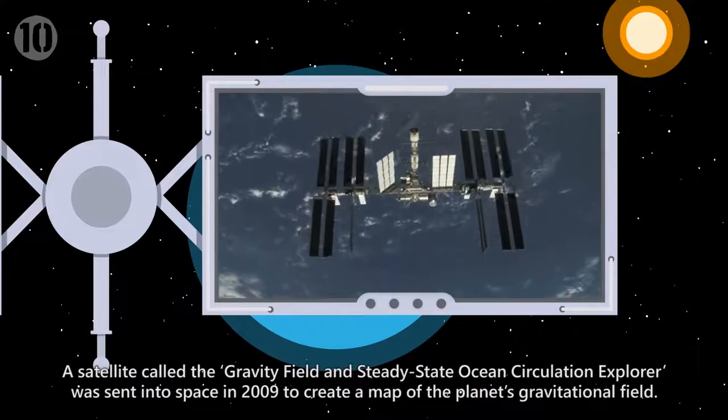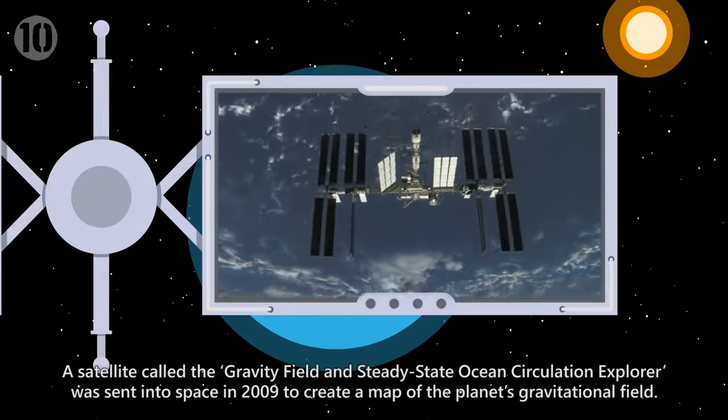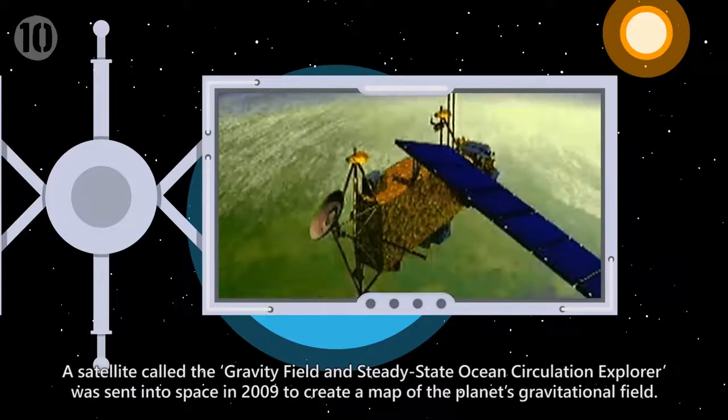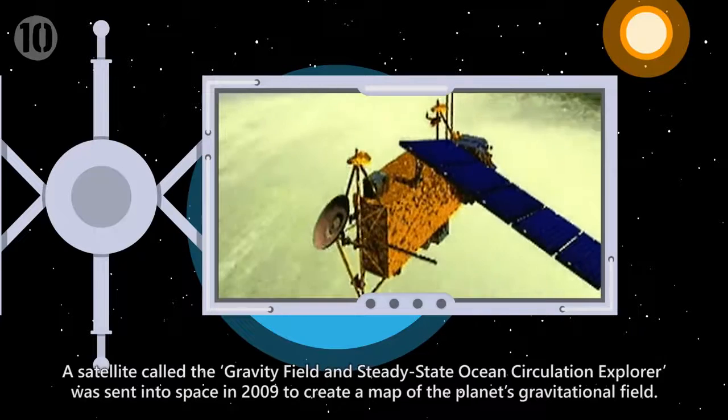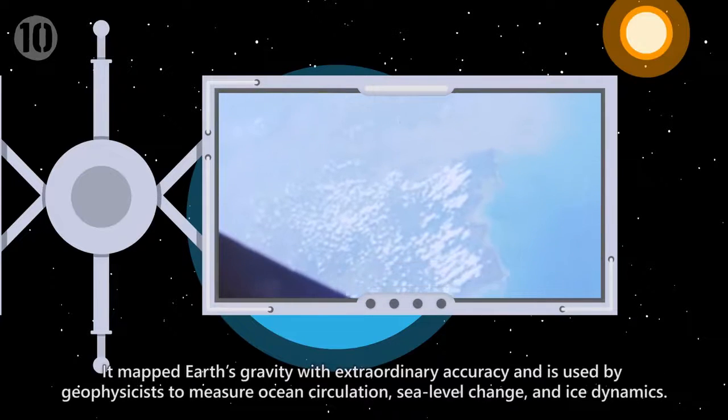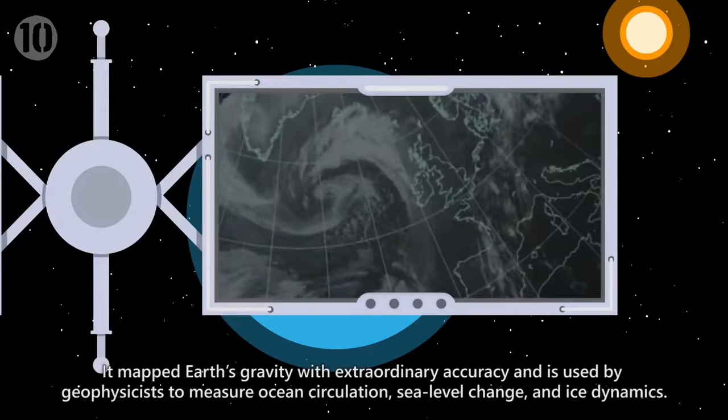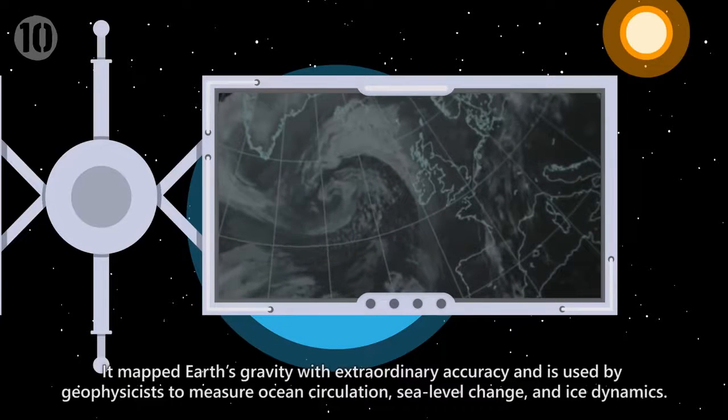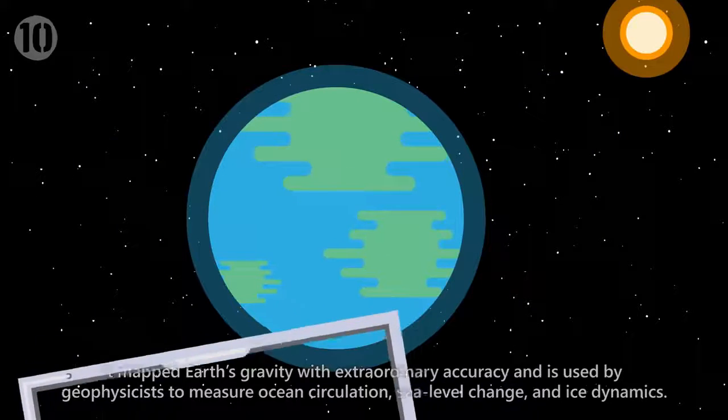A satellite called the Gravity Field and Steady State Ocean Circulation Explorer was sent into space in 2009 to create a map of the planet's gravitational field. It mapped Earth's gravity with extraordinary accuracy and is used by geophysicists to measure ocean circulation, sea level change, and ice dynamics.